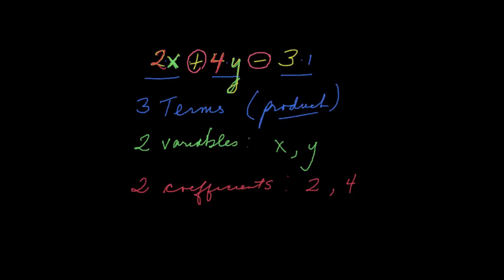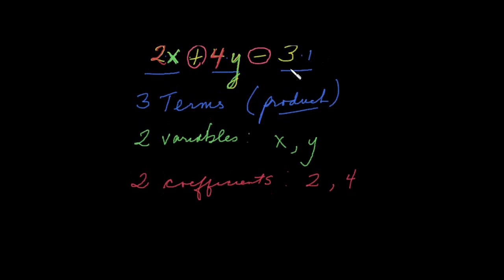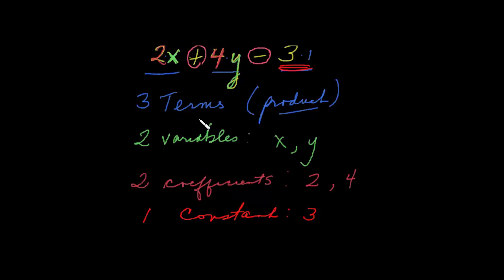Last but not least, we have this three sitting at the end all by itself. That three has a special name — it's a constant. So we have one constant, and the constant in this case is the three. So these are the parts of algebraic expressions: three terms separated by plus and minus signs, two variables x and y, two coefficients sitting in front of the variables, and one constant at the end.